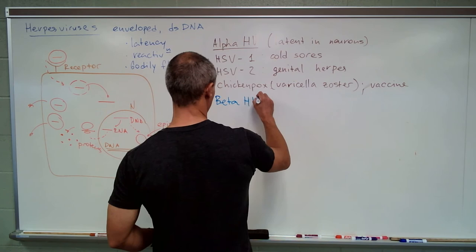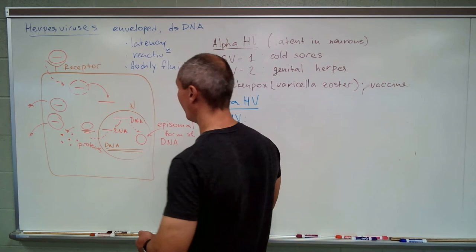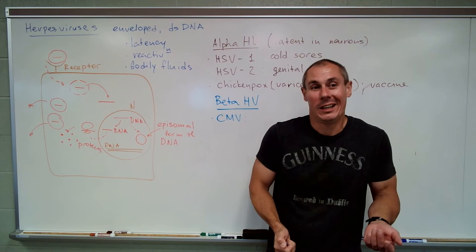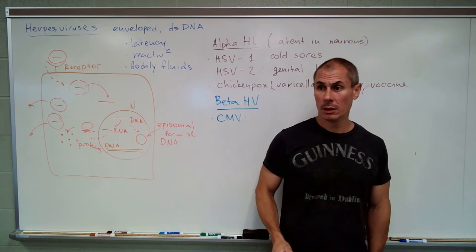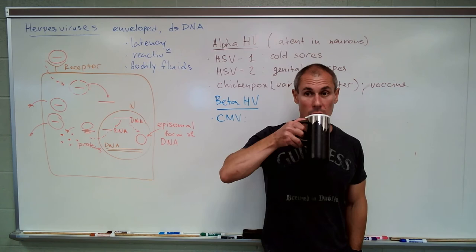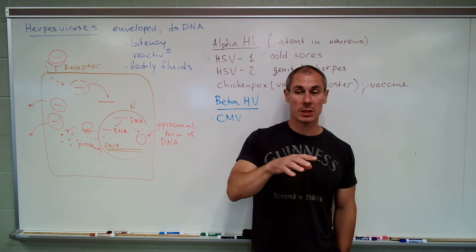The second type, beta herpes viruses — there's only one we're going to discuss: cytomegalovirus, or CMV. It's kind of nothing, really. This virus is usually acquired in childhood by sharing various bodily fluids — kids are particularly good at that. Usually there are no symptoms, maybe a bit of a cold or a very light mononucleosis-like illness.